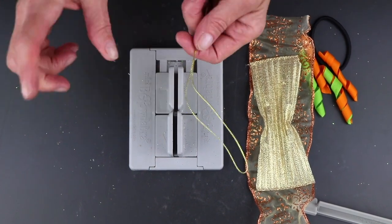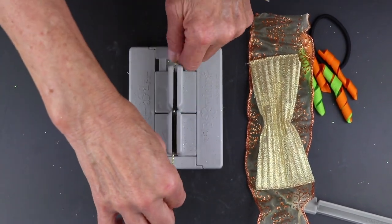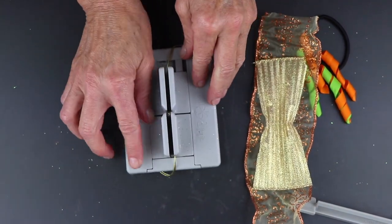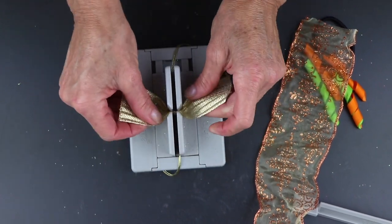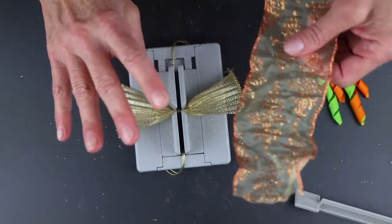I've got my Bowdabra Bow Wire. I folded it in half and I'm just going to lay it into my mini Bowdabra and tuck it underneath. Then I'm going to take my first piece of ribbon and just lay this down in the center of my mini Bowdabra.